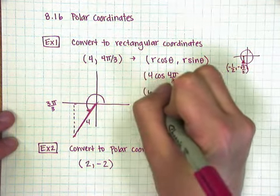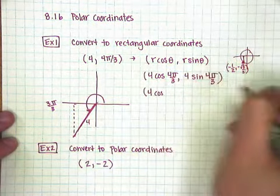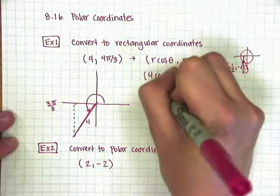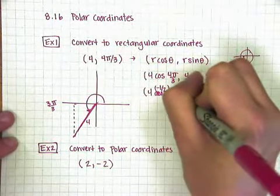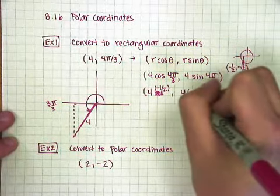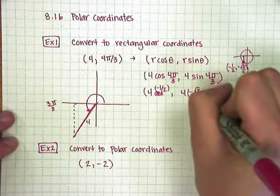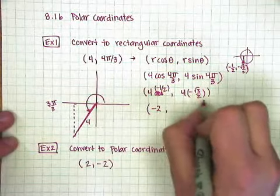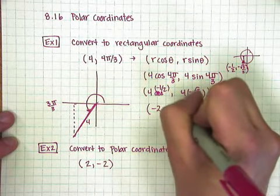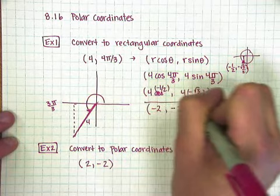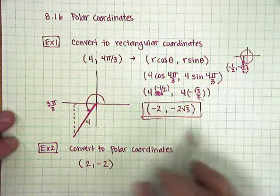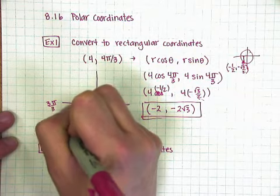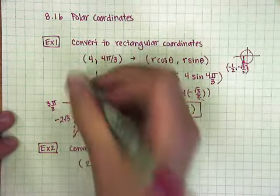And from there, that would mean 4 cosine of 4π over 3 is negative a half, so 4 times negative a half. And 4 times negative root 3 over 2 for the sine. 4 times negative a half is negative 2. And then the 4 and the 2 here reduce, and I get negative 2 root 3. So that's one way to do it. Here I've gone back 2, and I've gone down 2 root 3 for the sides of my triangle.